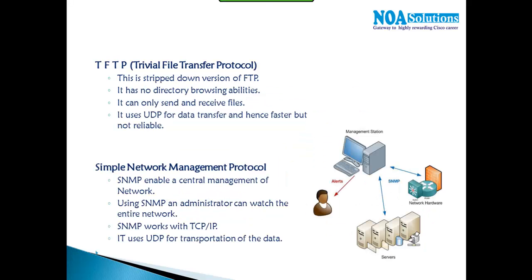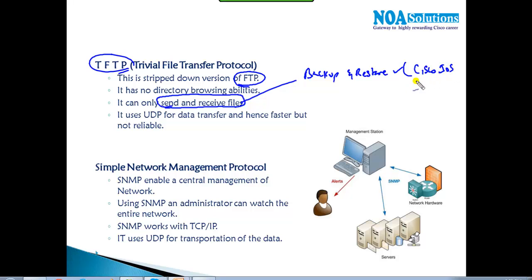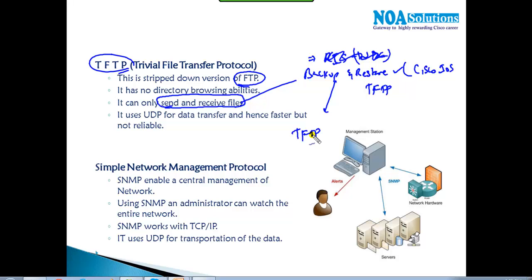TFTP — Trivial File Transfer Protocol — is a modified, simpler version of FTP used specifically for sending and receiving files. It is especially used for backup and restore of specific configurations, such as backing up Cisco IOS or configurations. In Microsoft environments, it is used for remote installation services and Windows Deployment Services, where you can install an operating system by booting from the LAN. TFTP is a UDP-based protocol.